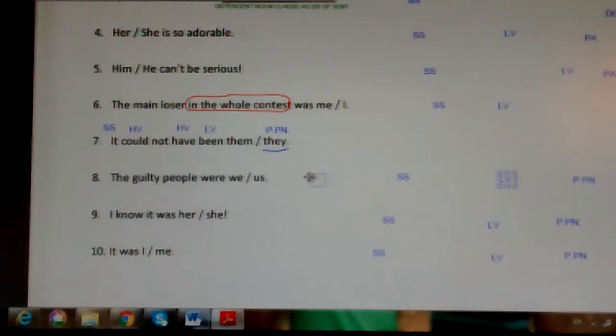And it could have been them or they, and I have to choose they because they is the predicate pronoun. The guilty people were we or us. No prep phrase. Were is my main linking verb. People would be my simple subject. What kind of people? Guilty people. There's an adjective there. And sticking with the framework of the sentence, I'm now looking for that predicate pronoun, and I have to choose we instead of us. The guilty people were we, predicate pronoun we.